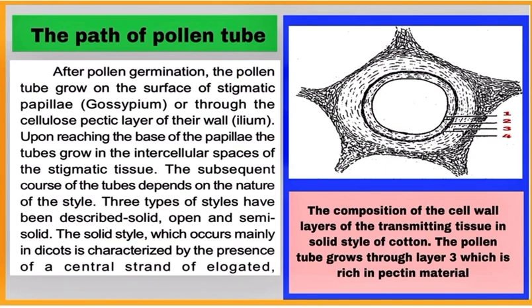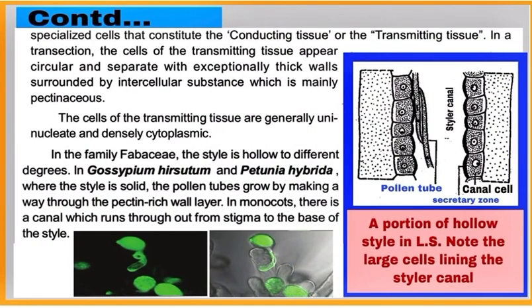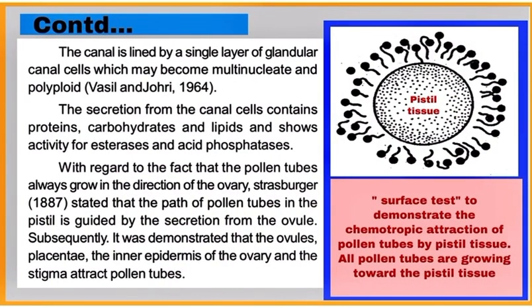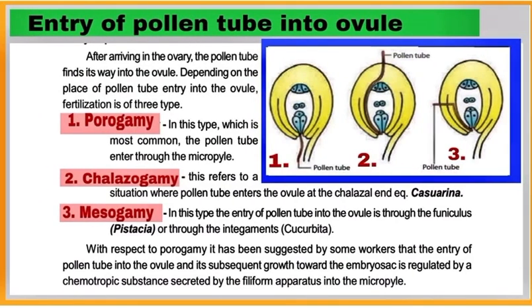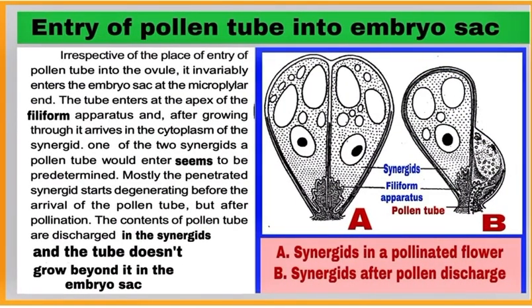Next, write about the path of the pollen tube — the passage of the pollen tube through the style, along with pictures. Pollen tubes always grow in the direction of the ovary. Entry of the pollen tube into the ovule can occur through the micropyle, chalaza, funicle, or integuments. Entry of the pollen tube into the embryo sac occurs through one of the two synergids.